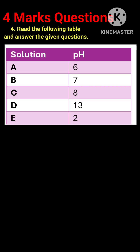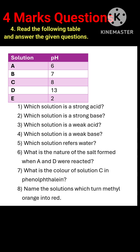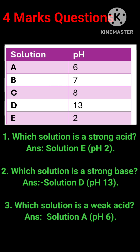Question 4: Read the following table and answer the given questions. Solutions and their pH values — A: 6, B: 7, C: 8, D: 13, E: 2. (1) Which solution is a strong acid? Answer: Solution E, pH 2. (2) Which solution is a strong base? Answer: Solution D, pH 13. (3) Which solution is a weak acid? Answer: Solution A, pH 6.